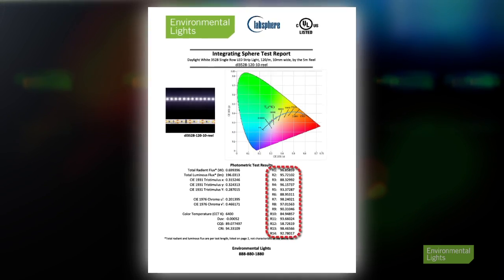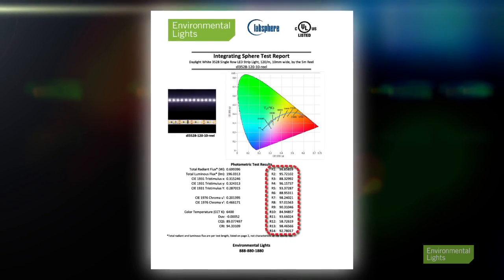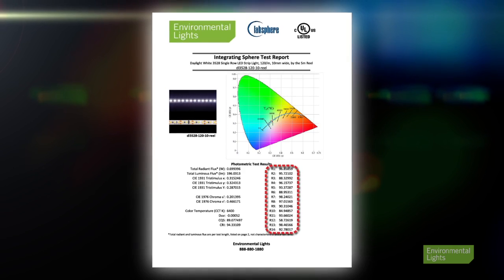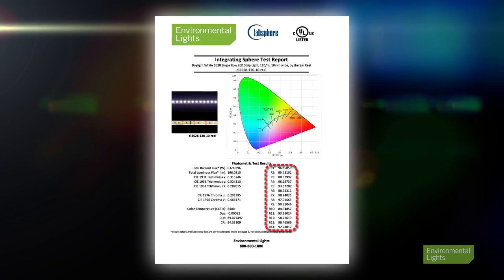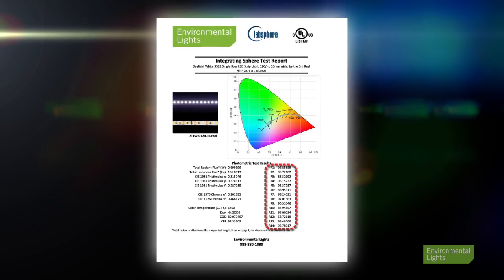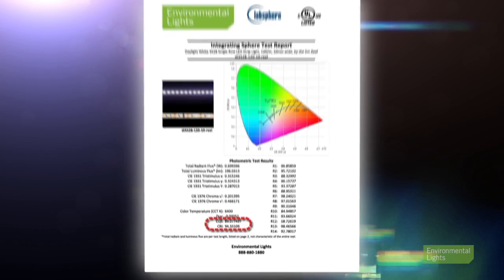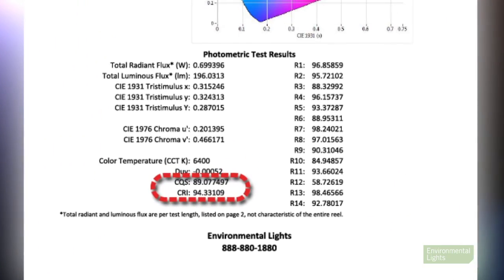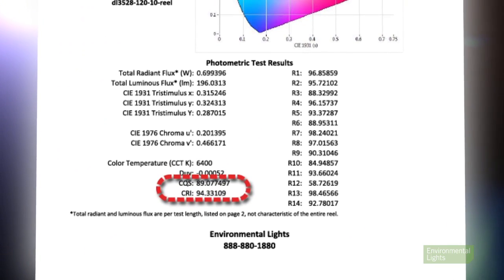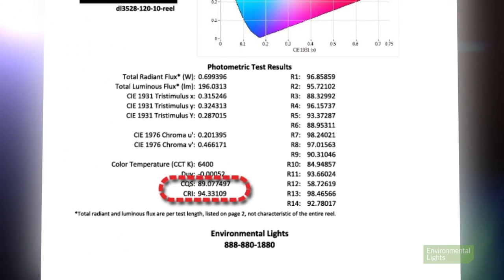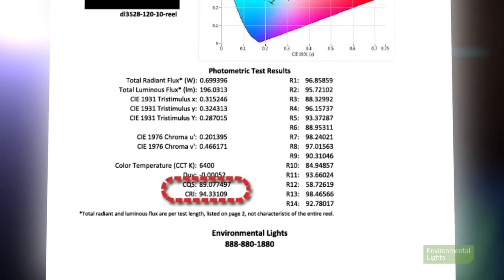Each R1 to R14 refers to a specific color and the ability of the light being tested to recreate them. R1 to R8 are used in generating the overall CRI, but R9 to R14 are also useful. We have provided both CRI and CQS values in our test reports for your reference.